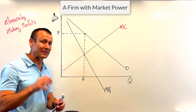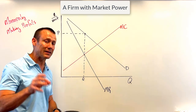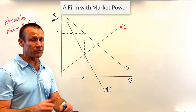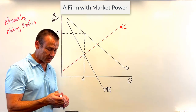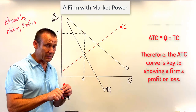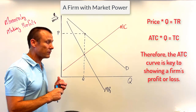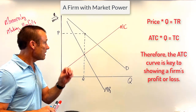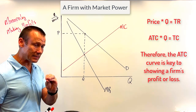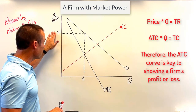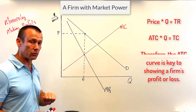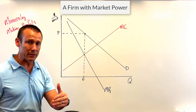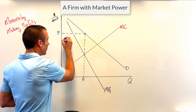I've got my price and my quantity. Now I need to bring in my ATC, because I need to show profit. If you're showing profit or loss, you need to locate the ATC curve. So I'm going to bring in the ATC and here is the key: I'm going to make sure that ATC is below P at Q. Say it one more time — make sure that ATC is below P at Q.